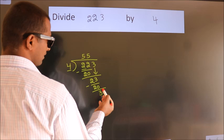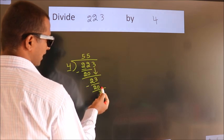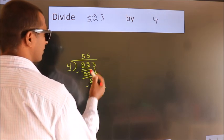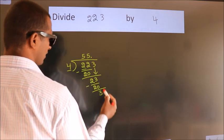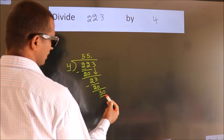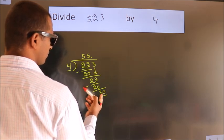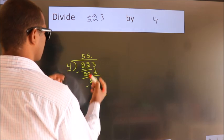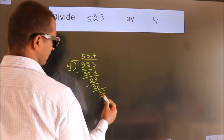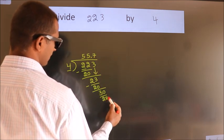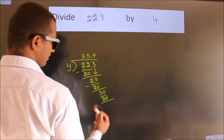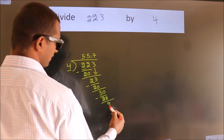After this, there are no more numbers to bring down. So what we do is put a dot and take 0, giving us 30. A number close to 30 in the fourth table is 4 sevens, 28. Now we subtract and get 2.